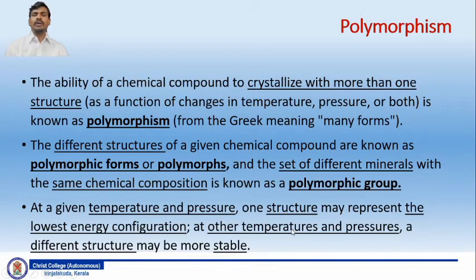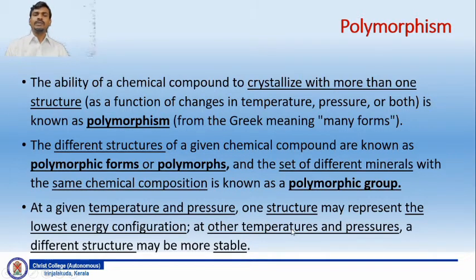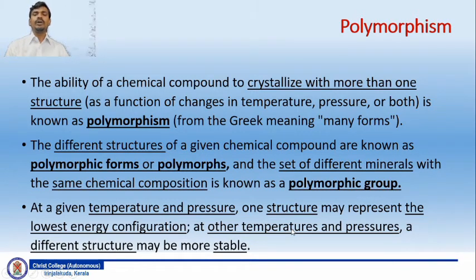The ability of a chemical compound to crystallize with more than one structure as a function of changes in either temperature or pressure or both is known as polymorphism. The term polymorphism is derived from a Greek word having the meaning of many forms. The different structures of a given chemical compound are known as polymorphic forms or polymorphs, and the set of different minerals with the same chemical composition is known as a polymorphic group.